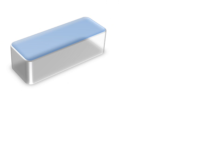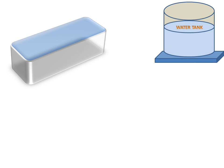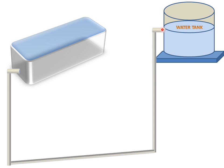Today we will discuss the solar water heater. There is a solar water container and a water tank. The water tank holds water at a higher height than the solar water container, and it is connected with a pipe to supply water to the solar container.